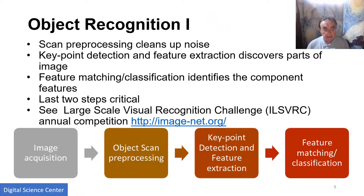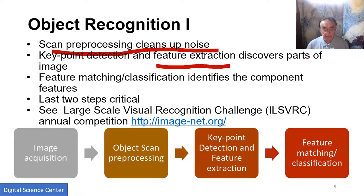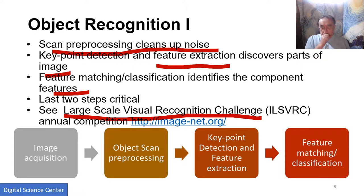So here is the sort of process in how we do this. We pre-process everything to clean up the noise. We try to find the key points within the image and extract some features to discover the parts of the image. You have to identify the component features. There was a very important driving competition which has now been won. And there was a famous collection of pictures called ImageNet, which were labeled. A huge effort was placed into this very dull job of labeling these images, and that was essential to advance this field.